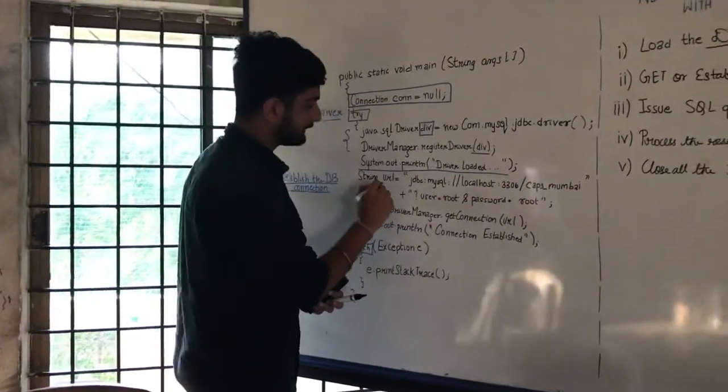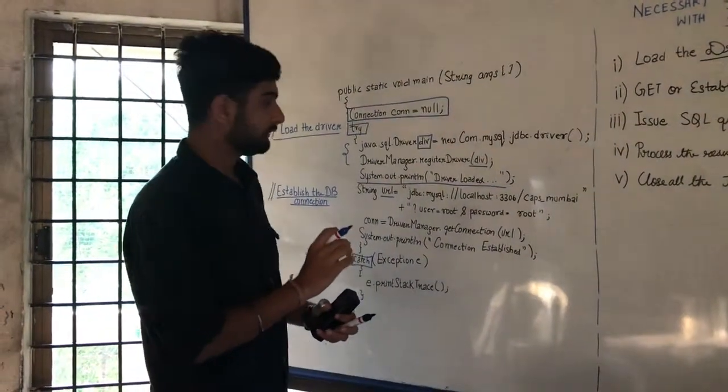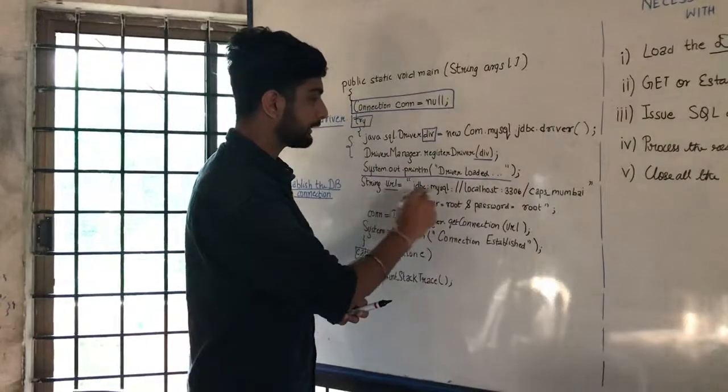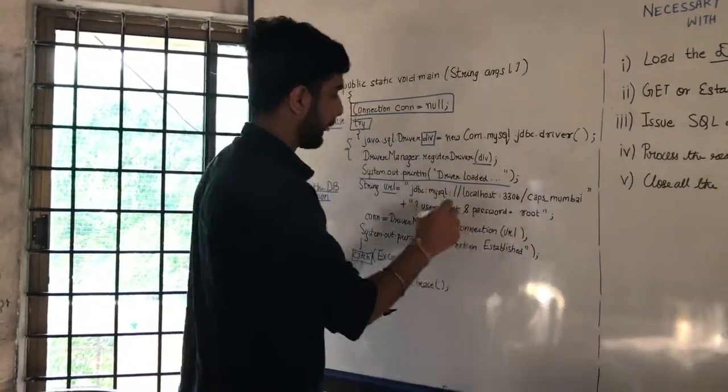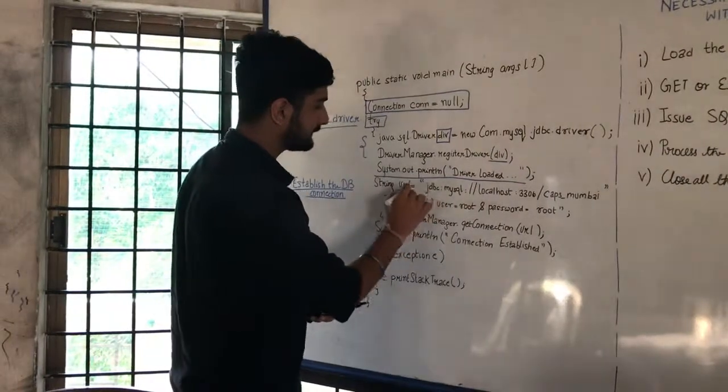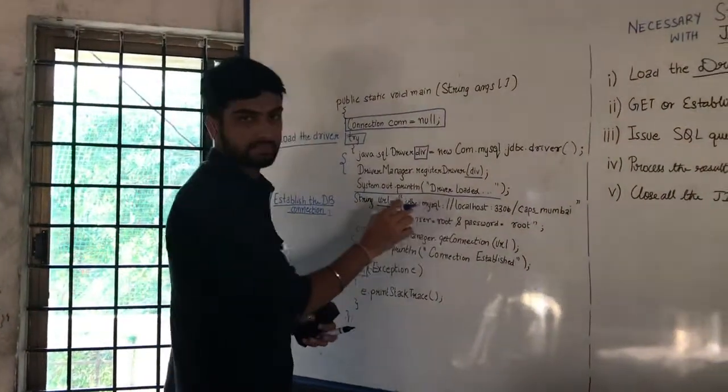We will first mention the URL. The URL is nothing but the uniform resource locator. Here we will mention the location of the database that we have. This has a particular format which we follow.